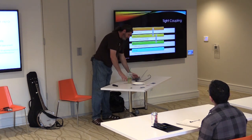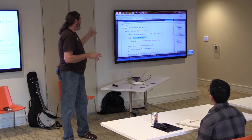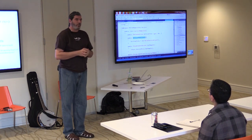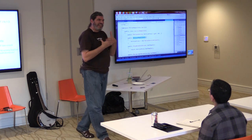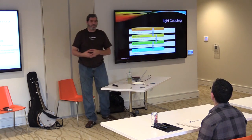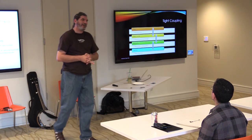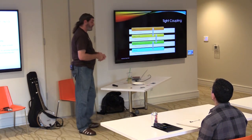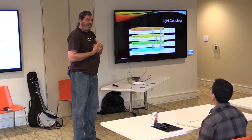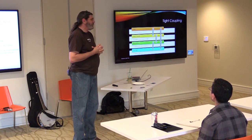It gets worse. In the viewmodel's constructor, I'm newing up an instance of ServiceRepository — our data access layer. New is Glue. I need a compile-time reference to that ServiceRepository and I've taken responsibility for its lifetime. And in the repository's constructor, I'm newing up an instance of the proxy pointing to our production service. Since view is tightly coupled to viewmodel, viewmodel to repository, and repository to service — our view is tightly coupled to our service.